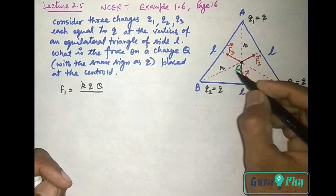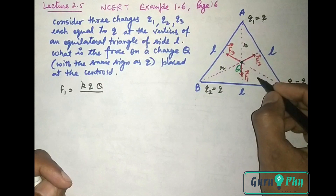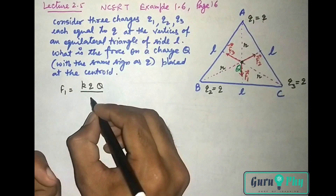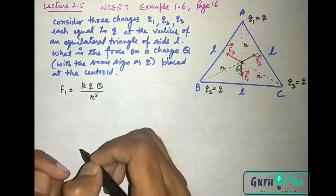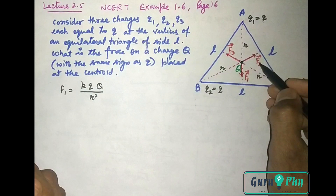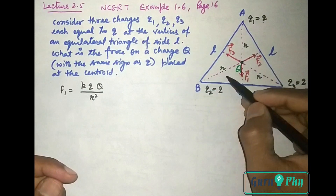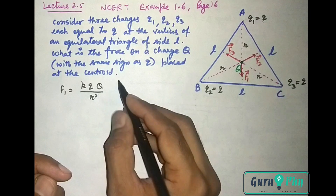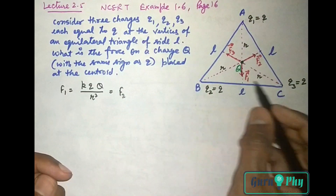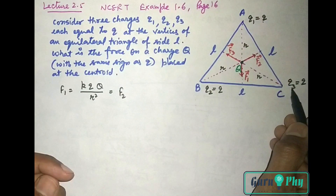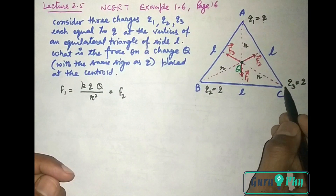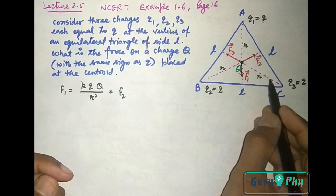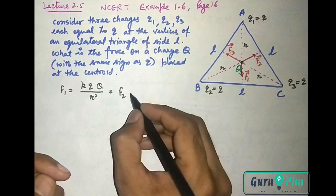क्योंकि equilateral triangle है, तो तीनों distance भी R हैं। तो F1 = KqQ/R²। F2 की बात करें तो यह भी KqQ/R²। F3 की बात करें तो यह भी KqQ/R²। तो F3 भी same हो जाएगा।